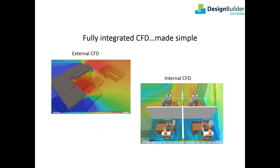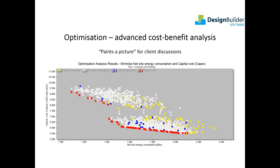Our simplified CFD tools enable regular simulation modellers, without necessarily any prior CFD experience, to undertake internal and external CFD analysis using the same model. EnergyPlus thermal simulation results can be imported directly into CFD as boundary conditions. In the context of health and wellbeing, we can use CFD to analyse external pedestrian comfort and internal zone comfort conditions in much more detail. Optimisation is an advanced and automated form of cost-benefit analysis to help find the best combination of design variables — a tool right at the cutting edge of mainstream modelling.